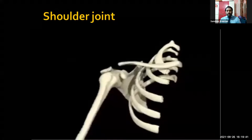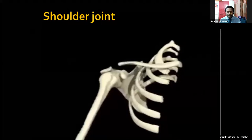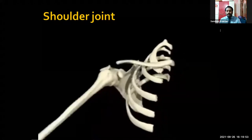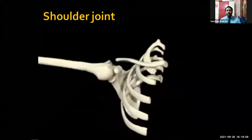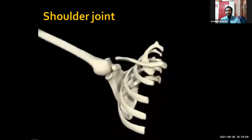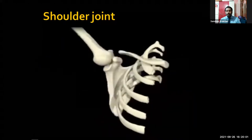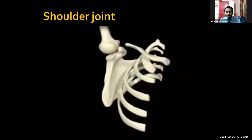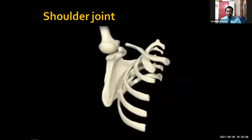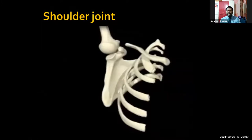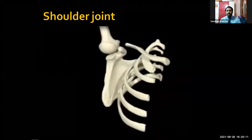The shoulder joint is a very peculiar joint in its anatomy because it is the most mobile joint in the body, but to gain this mobility, stability has been sacrificed. Up to 90 degrees of shoulder movement occurs at the glenohumeral joint, after which the scapulothoracic joint starts moving. Because stability has been sacrificed for mobility, the shoulder joint is also the most dislocated joint in the body.